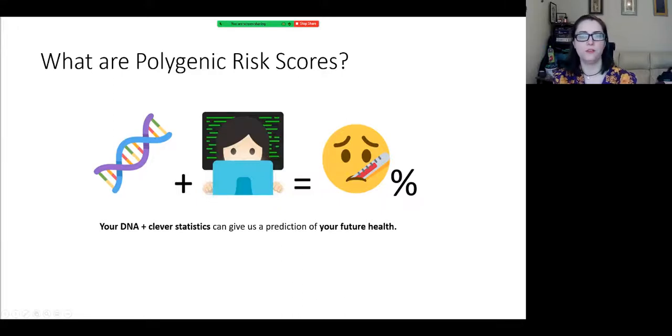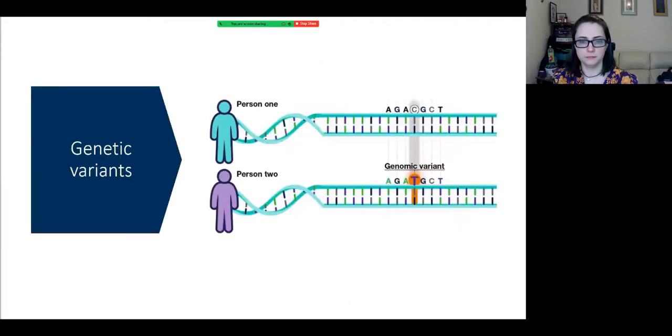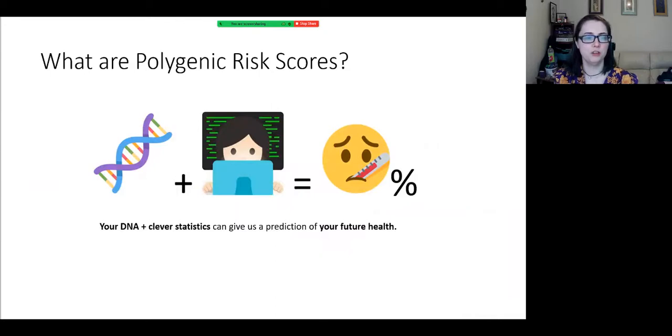Polygenic risk scores are an important research and healthcare tool that many people haven't heard about. They're starting to be used by doctors on patients as part of disease screening, particularly when there's a family history of disease, for example in breast cancer screening. One of our key goals today is to find better ways to talk to people about polygenic risk scores. Fundamentally, polygenic risk scores are a way we can use your DNA to give us a prediction of what your future health might be like.